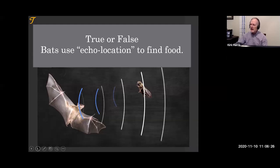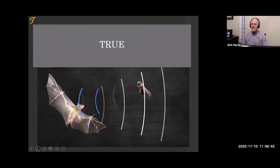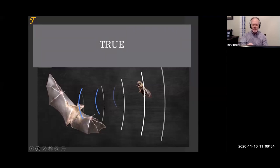It's true — it's echolocation. They're sending out a sound wave and they're receiving it back. They're receiving the echo to locate where they're going. I never really thought about going to the kitchen and making sounds and listening for reflections to know where I'm going. I have a feeling that would be a disaster.